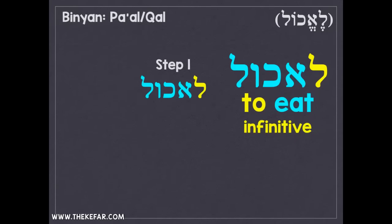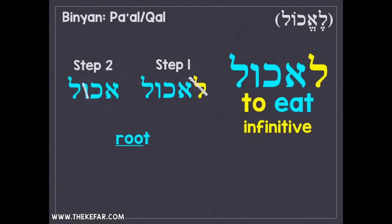Step one: remove the initial lamed, which gives us the 'to' form of the verb. Step two: check if we have the three letters needed for the root. There's still an extra letter, and the second-to-last extra letter in this Binyan will be either a vav or a yod. With le'echol it's a vav, so we remove it. Now we have the three letters of our root: alef-chet-lamed, achal. Le'echol is to eat and the root is achal.